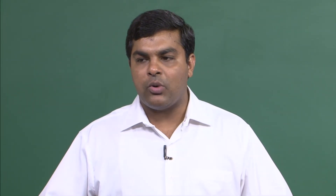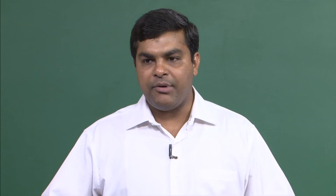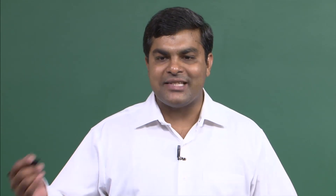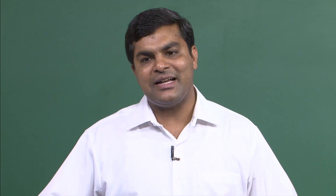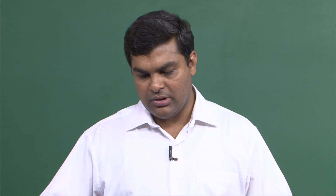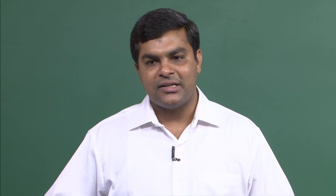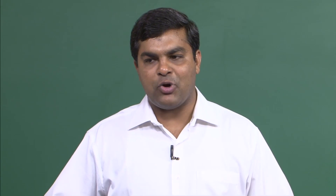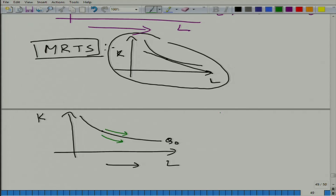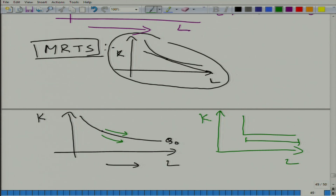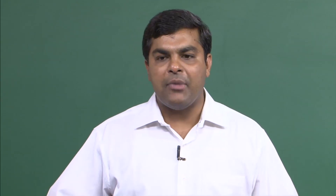Unless marginal productivity of labor equals zero and we want to stay on the same isoquant — when MPL is zero and we increase labor, the isoquant should be horizontal at that point, as we see in the case of perfect complements with the horizontal arm.